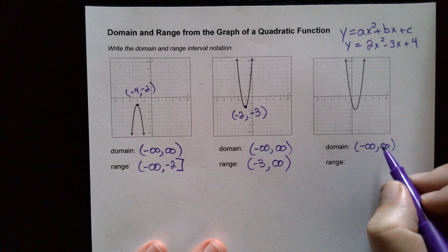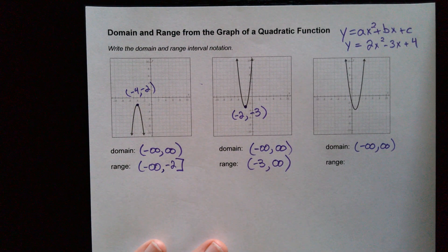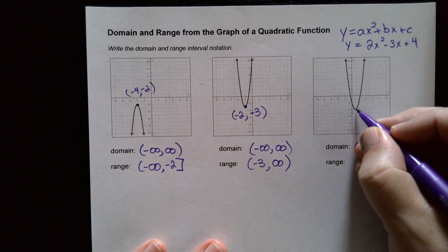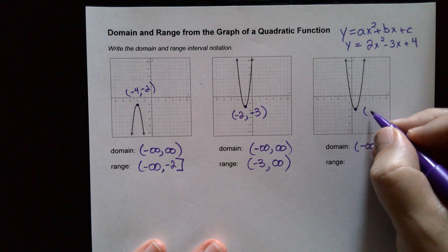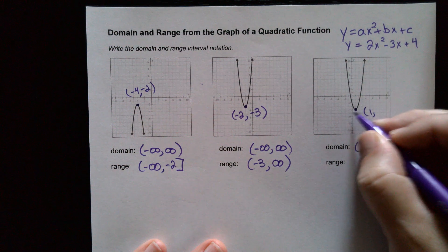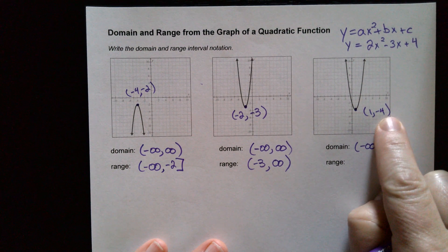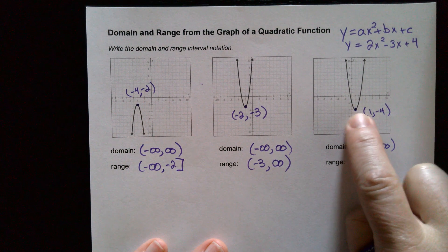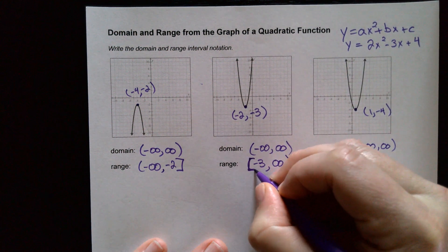Let's do one more. We already said the domain is negative infinity to infinity, because it keeps going left and right forever. Now the range, we find that vertex right there, and that vertex is the point, let's see, 1 on the x and negative 4. Now is this vertex the lowest point or the highest point of this graph? What's the lowest, so that's what we're going to write first. Oh, let me come back here, because I did not write a bracket there.